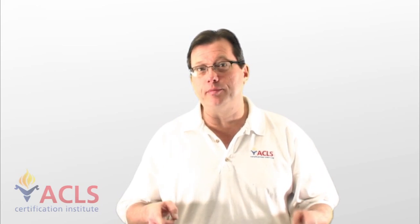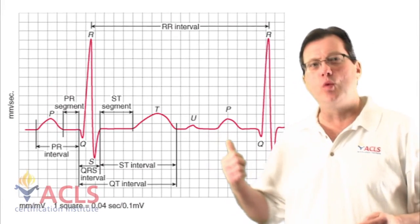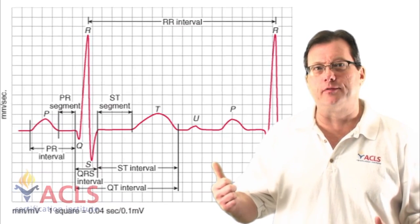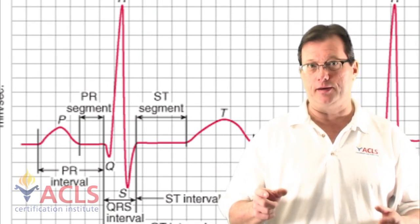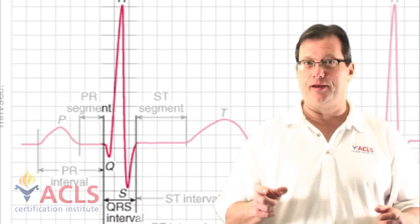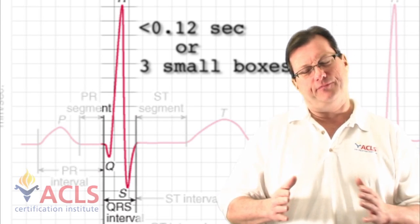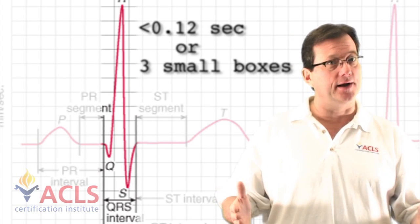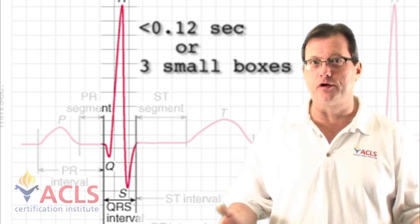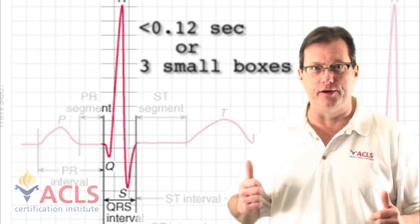So what makes a narrow complex tachycardia a narrow complex tachycardia? Generally we're looking at the width of the QRS complex. The width of the QRS complex should be less than — or at least not greater than — 0.12 seconds. If it's greater or wider than that, then it's a wide complex tachycardia, possibly ventricular in origin, and that is a topic for another video.